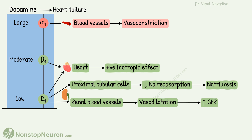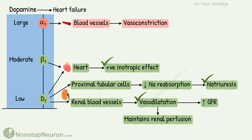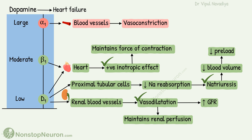Dopamine is commonly used for heart failure. In this condition, renal vasodilation, natriuresis, and positive inotropic effects are beneficial. Renal vasodilation helps maintain renal perfusion. The natriuretic effect reduces blood volume, which decreases preload on the heart. The positive inotropic effect helps the failing heart maintain its force of contraction.